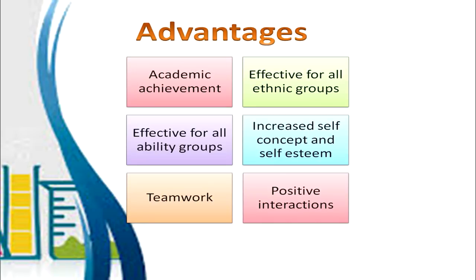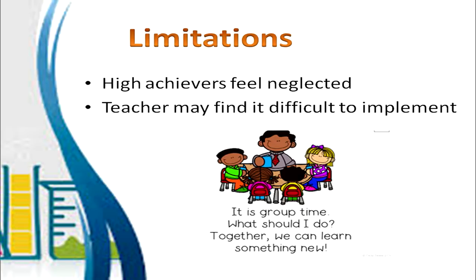There are six phases in cooperative learning. The advantages are: academic achievement of the child is enhanced, it is effective for all ethnic groups and all ability groups, there is increased self-concept and self-esteem among team members, students learn to work in a team, and there are positive interactions because students are rewarded only when the group works together. There are also limitations — high achievers often feel neglected, and the teacher may find it difficult to implement this type of learning in the classroom.